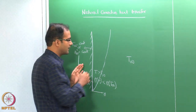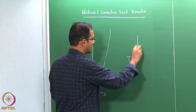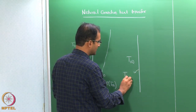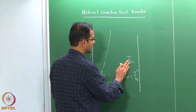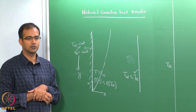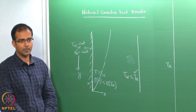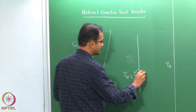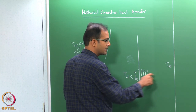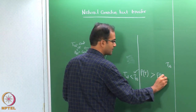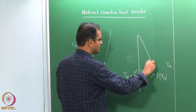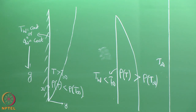You can also reverse the temperature direction — have a cold plate with heated ambient air, where T_wall is less than T∞. In this case, the density near the wall ρ(T) will be greater than ρ(T∞). The heavier fluid has a tendency to go down, and therefore the boundary layer in this case goes from top to bottom.